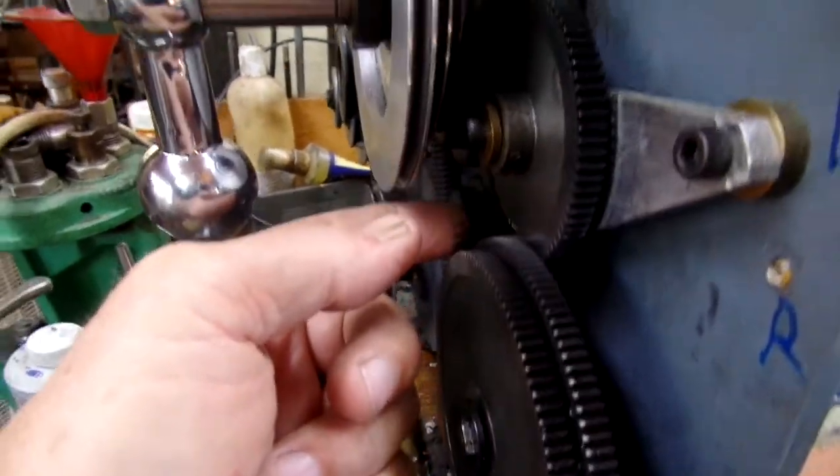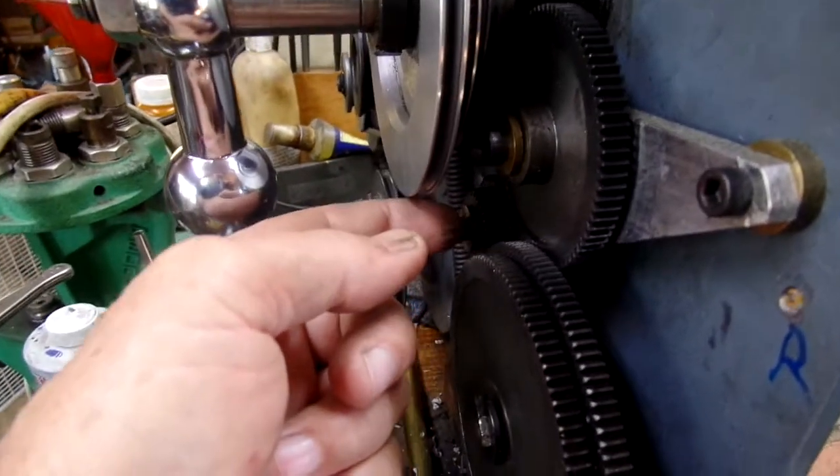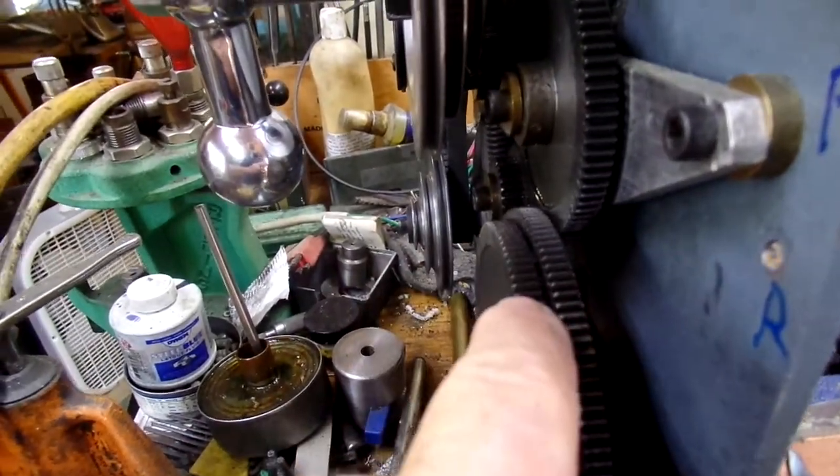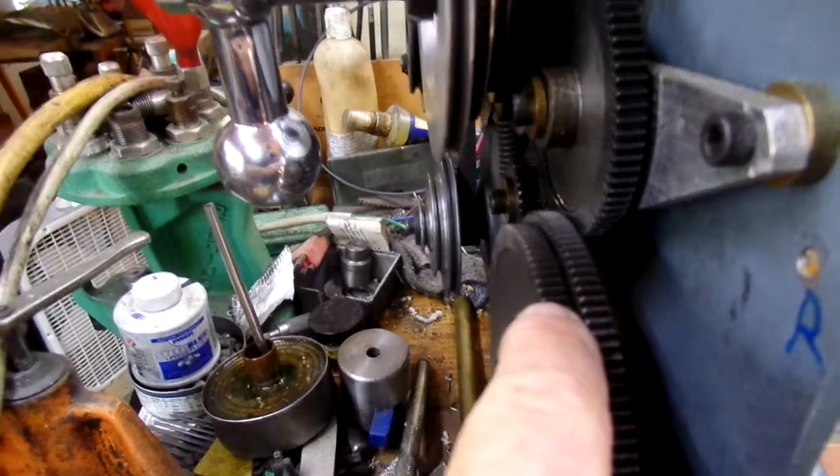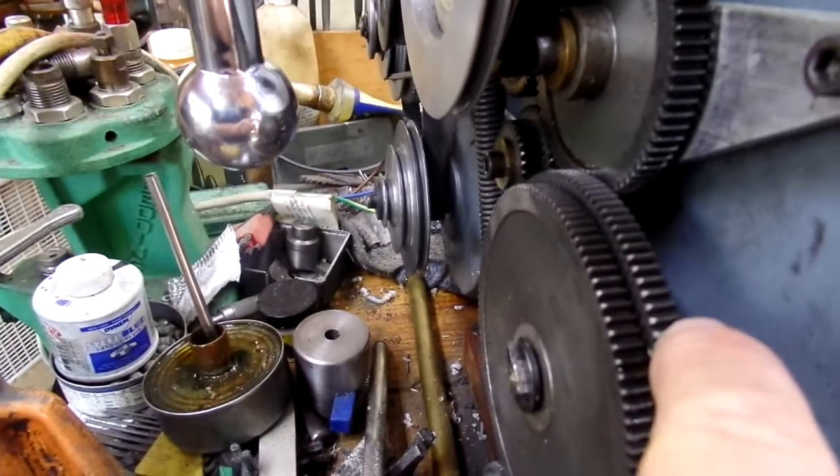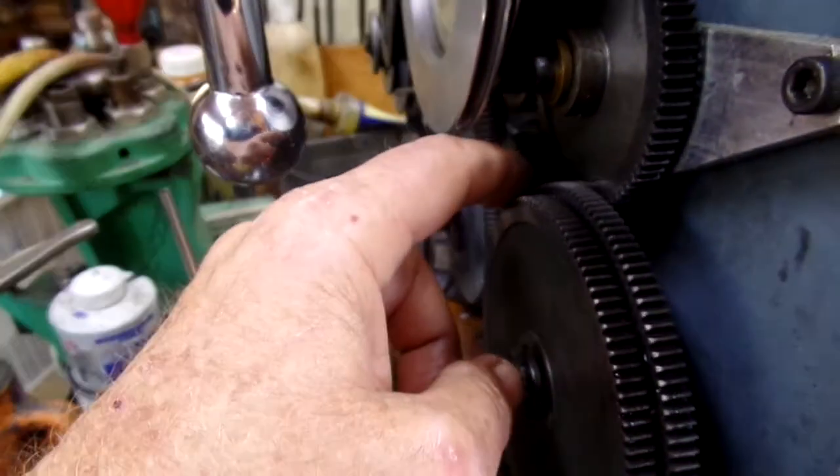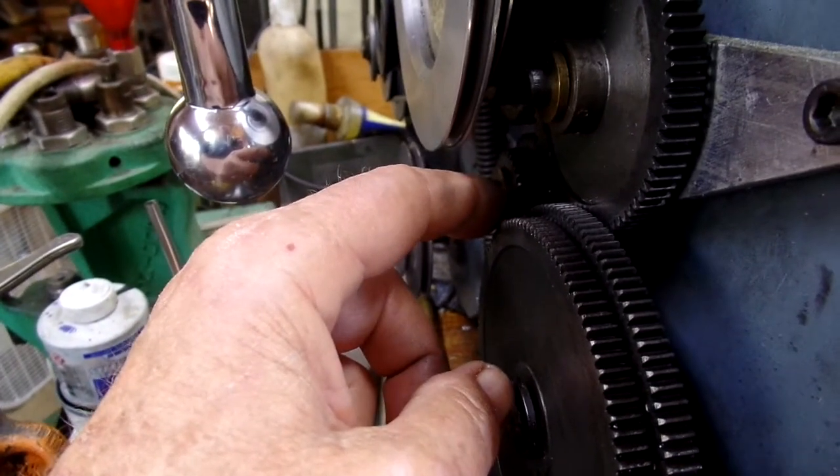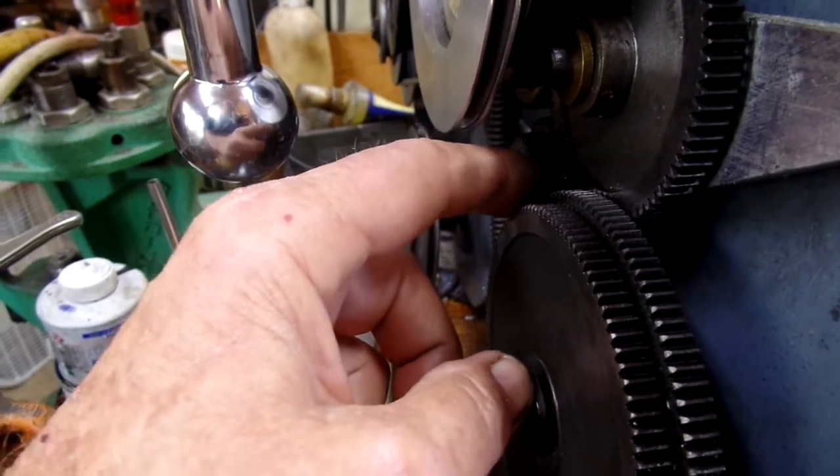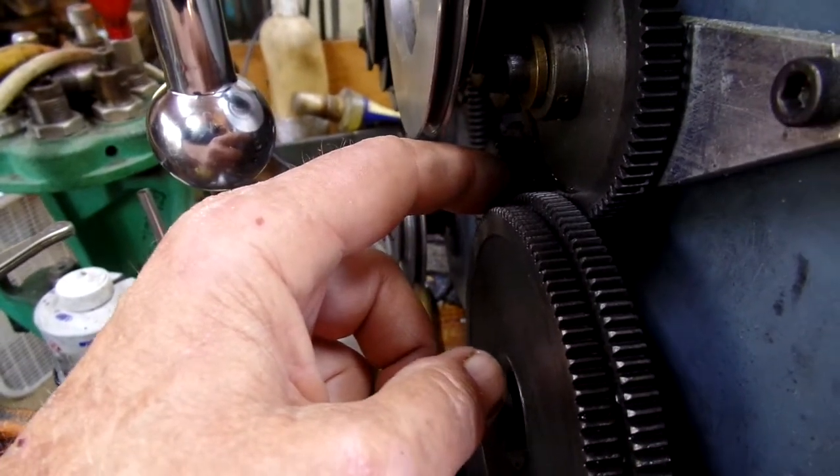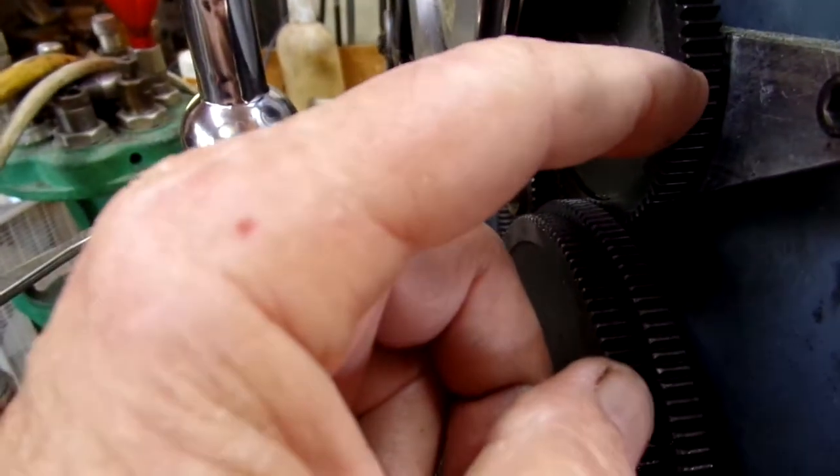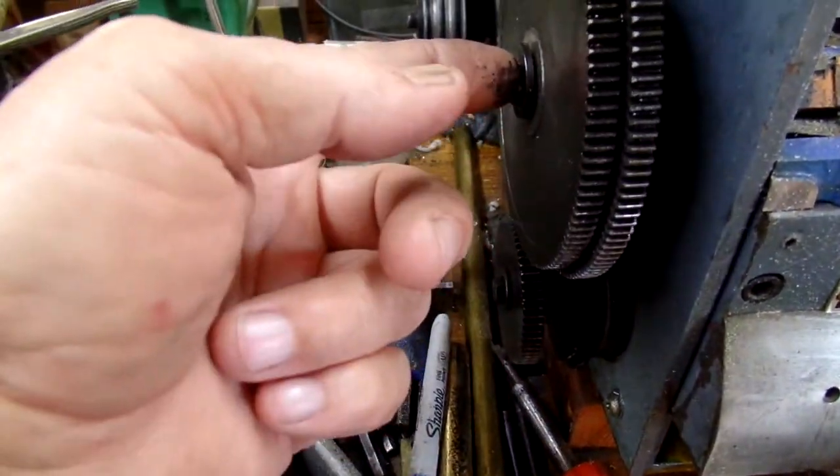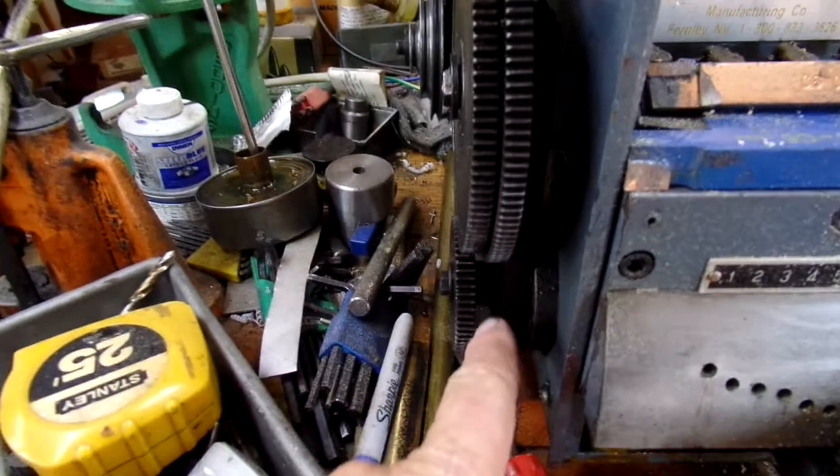The 127 tooth gear, the 120 tooth gear. So the 127 is always driven by this gear when you're setting up for 4 threads per millimeter. There will be an 80 tooth gear on this one, same size as this. This is the B gear, C gear, B gear. There's a spacer in there.